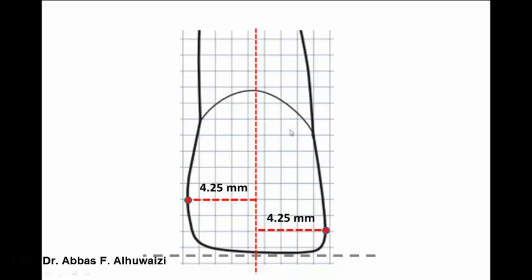At the cervical area, the width of the crown is 7 mm. The deepest point of the cervical line curve distally to the midline is 3.5 mm, and it is also 2 mm below the height of the crown from the cervical line. The mesial point is also 3.5 mm away from the midline, but 1 mm below the distal point, making it 3 mm away from the height of the crown cervical.